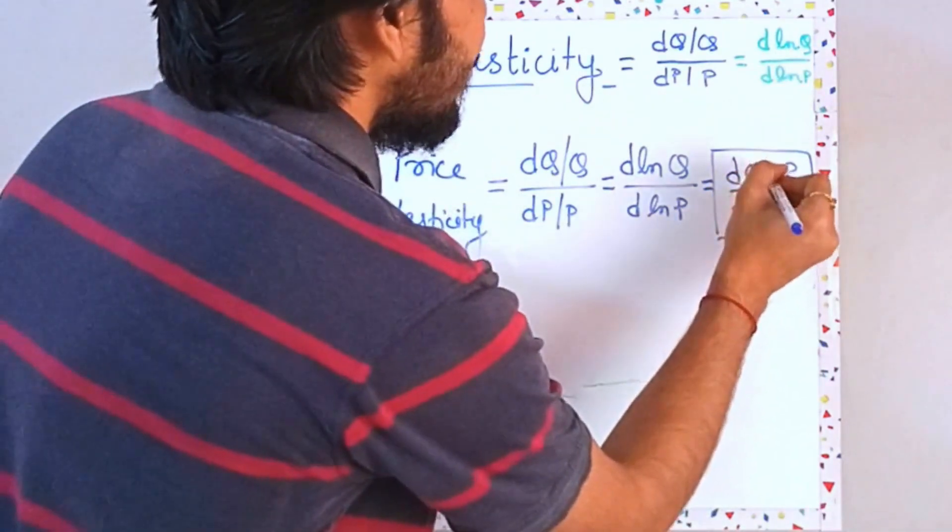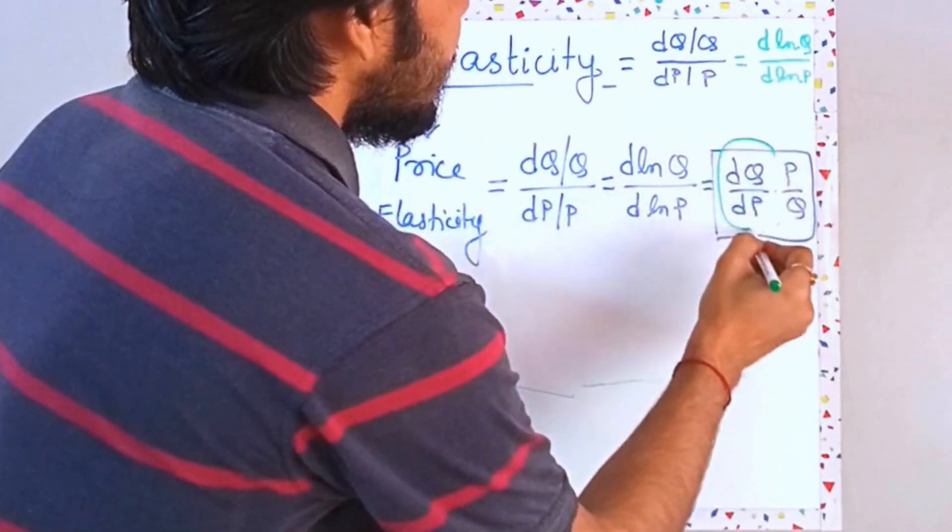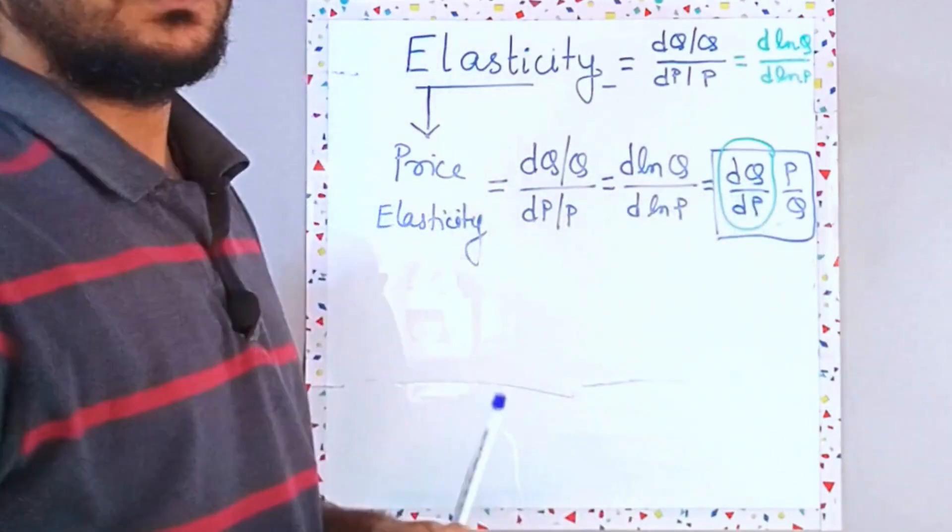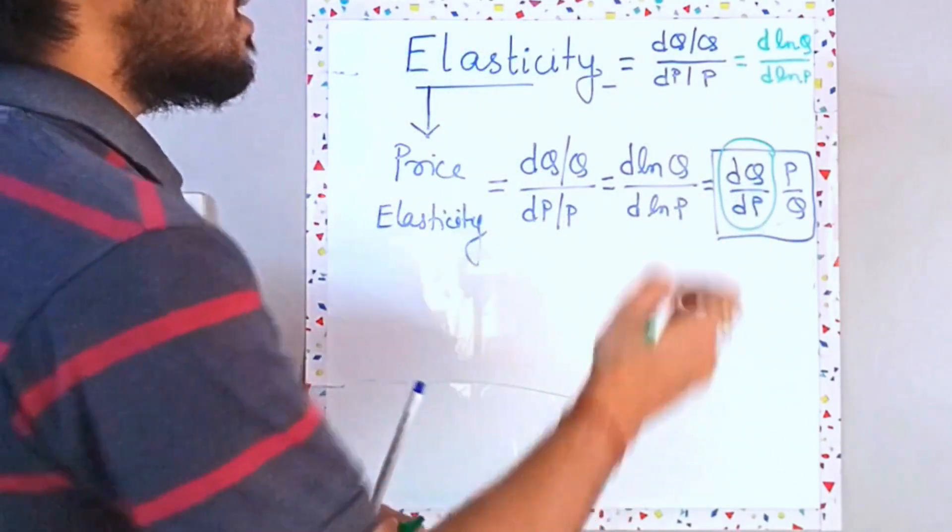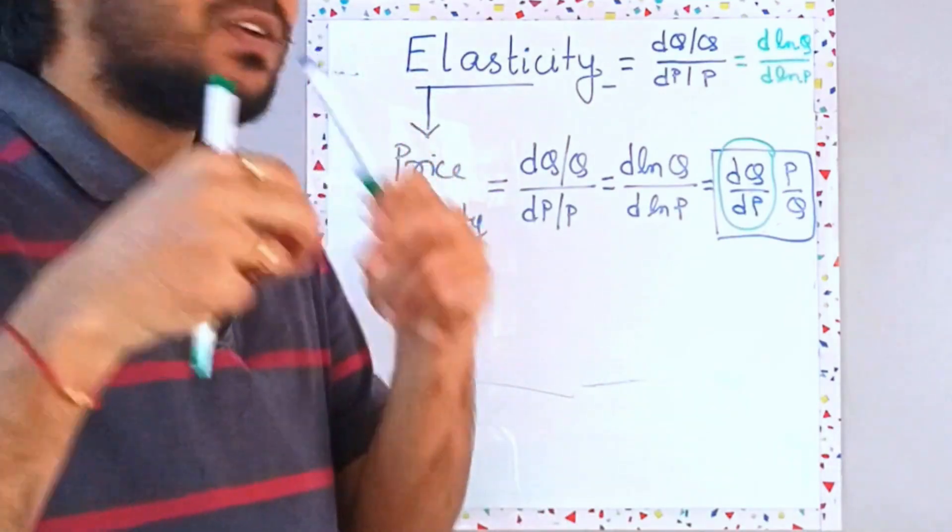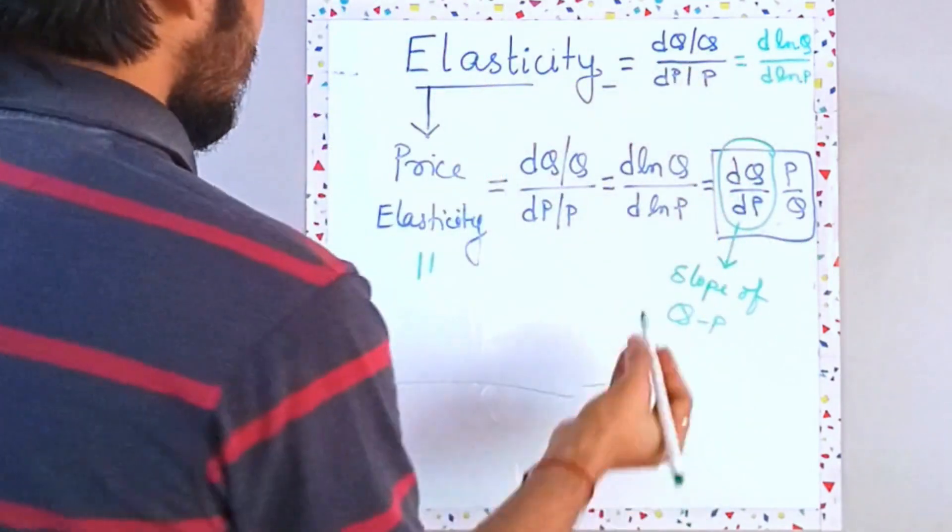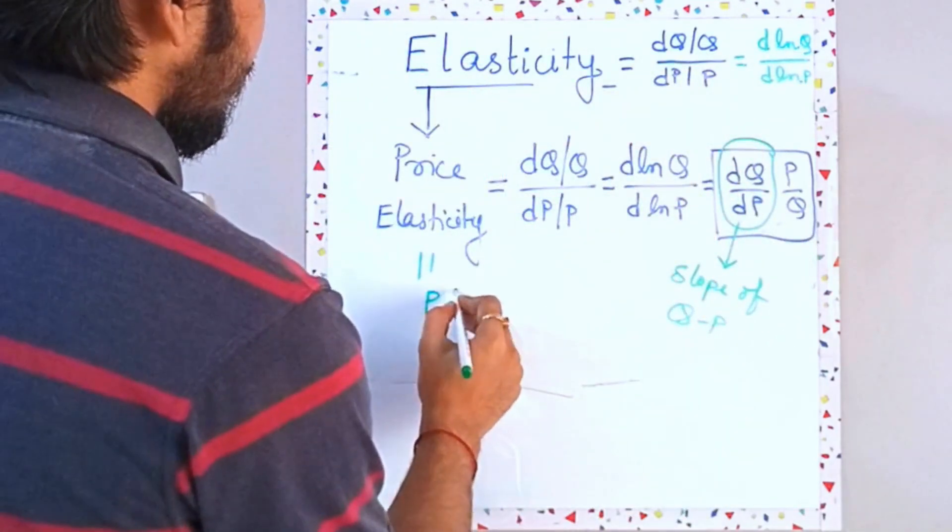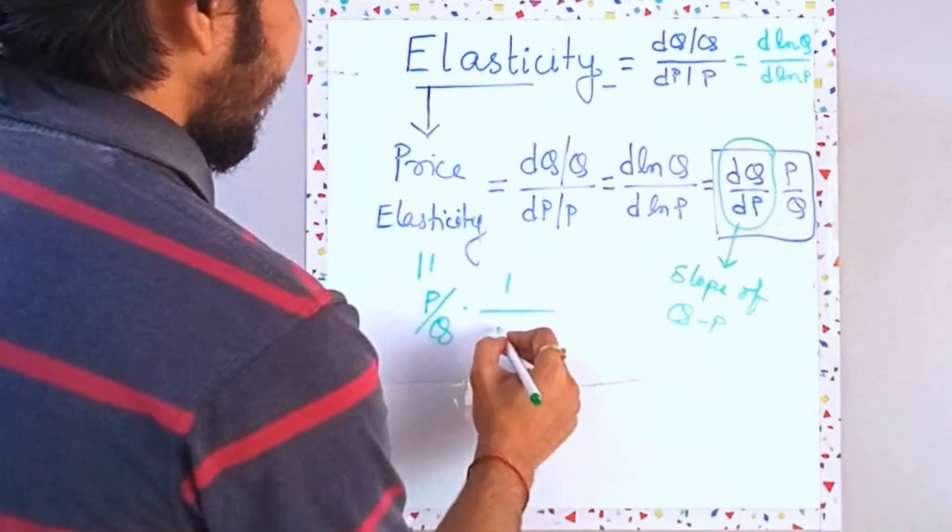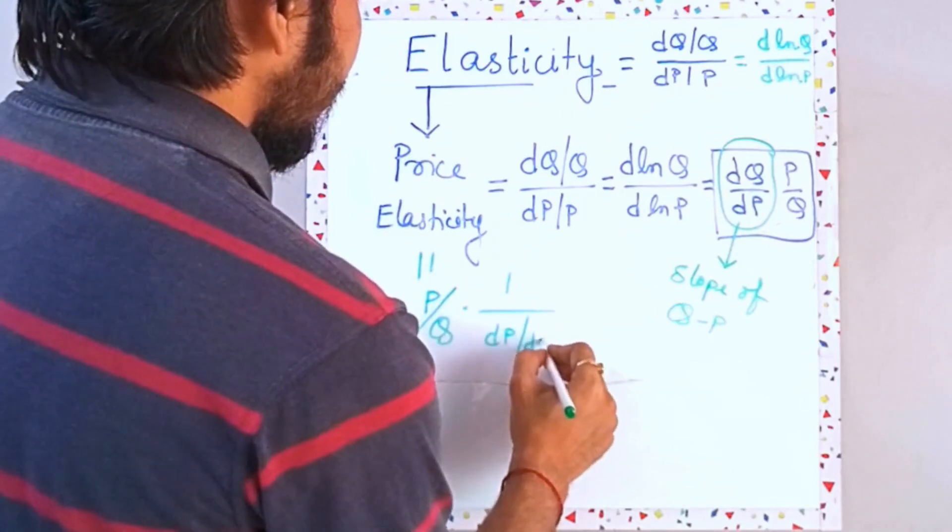Now you can safely recall this first term. This first term is your differentiation of Q with respect to P, right? So it's nothing but the slope of Q versus P diagram, Q versus P graph. In place of DQ upon P, you can write DP upon Q inverse. So this will be P by Q into 1 divided by DP upon DQ.